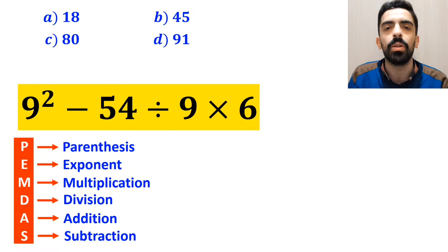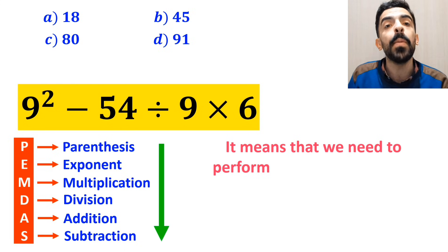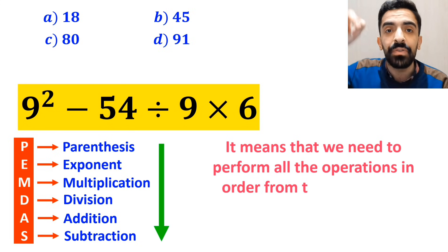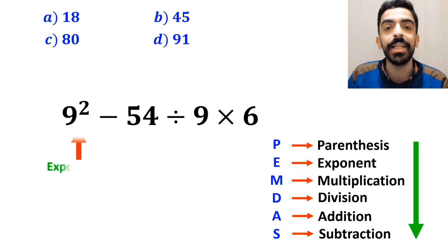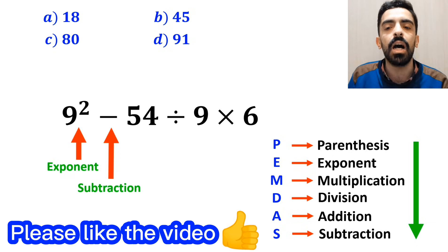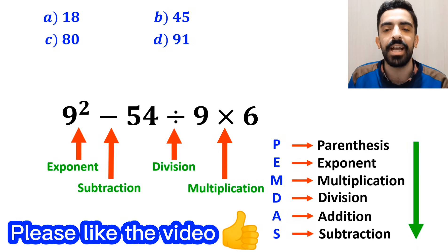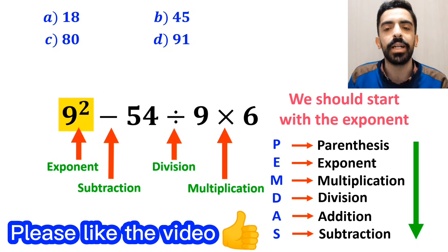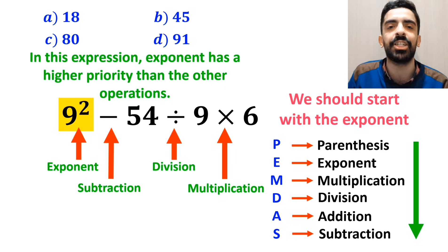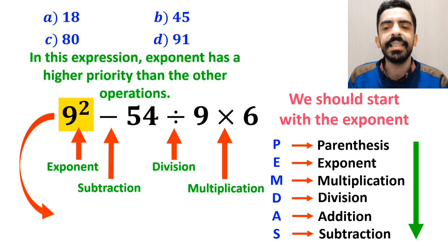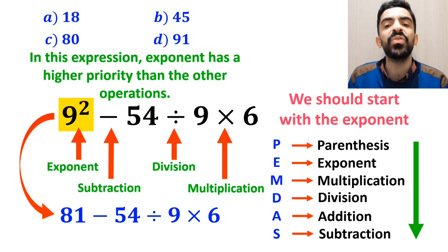We need to perform all the operations in order from top to bottom. As you can see on the screen, in this expression, first we have an exponent, then a subtraction sign, followed by a division, and finally a multiplication. We should start with the exponent because it has a higher priority than the other operations. So this expression simplifies to 81 minus 54 divided by 9 times 6.